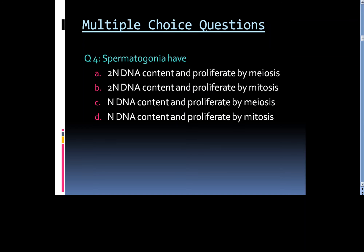Question number 4: Spermatogonia have: A. 2N DNA content and proliferate by mitosis, B. 2N DNA content and proliferate by mitosis, C. N DNA content and proliferate by mitosis, or D. N DNA content and proliferate by mitosis.